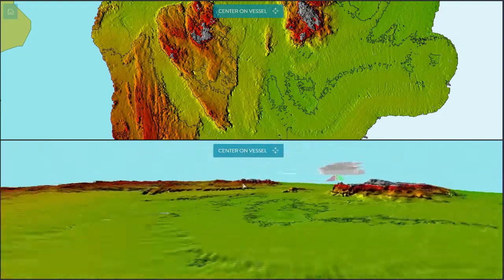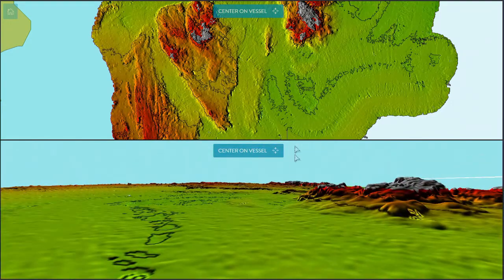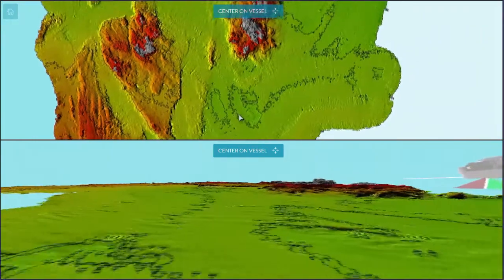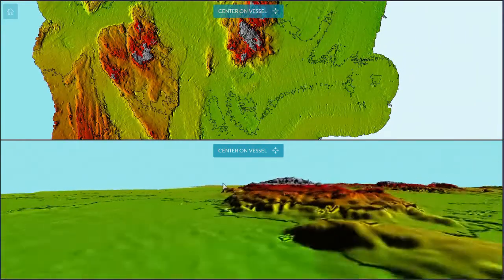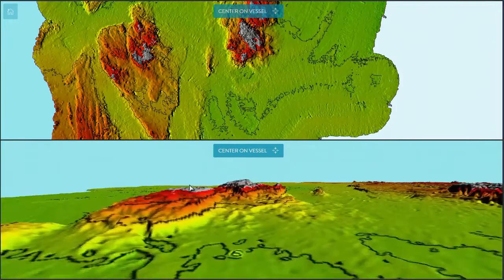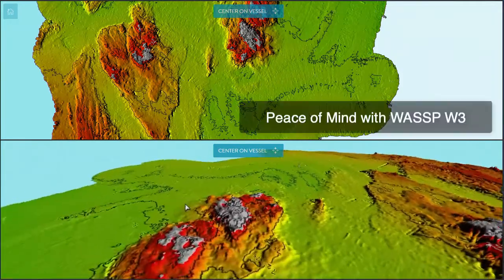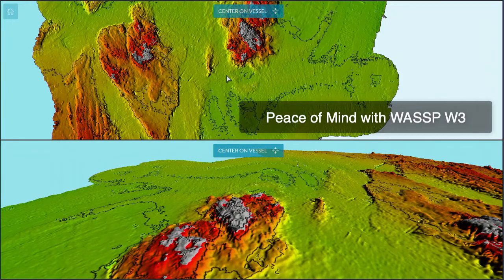Without this valuable information generated by our WASP W3, we could have charged straight into the bay unaware of this rock in the middle, which is clearly a real danger for any vessel drawing 3 metres or more. But with our WASP W3 we have peace of mind.